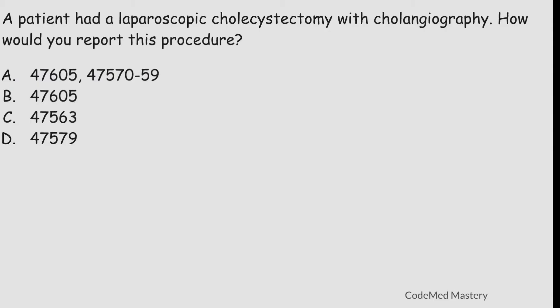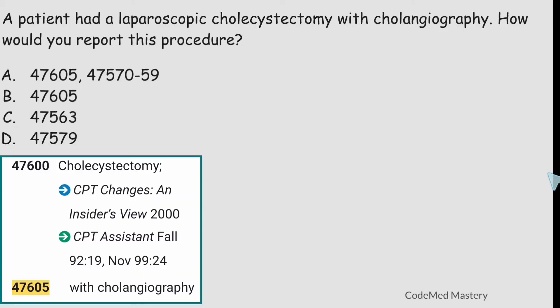Check option A: 47605. Code 47605 is for cholecystectomy with cholangiography, but in the scenario they have mentioned laparoscopic cholecystectomy with cholangiography. Code 47605 comes under excision — cholecystectomy with cholangiography — but we need to code for laparoscopic cholecystectomy with cholangiography, so option A is wrong. Option B also lists 47605, so that will also be wrong.